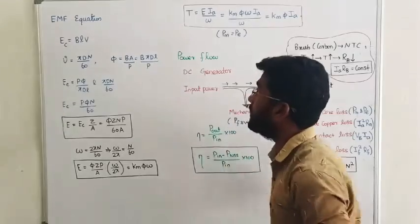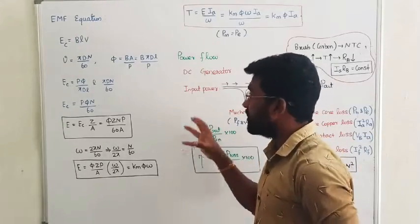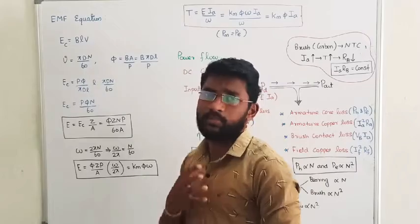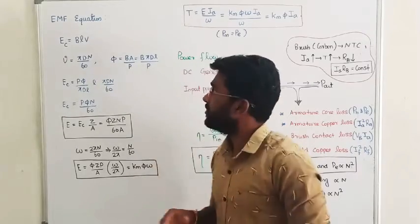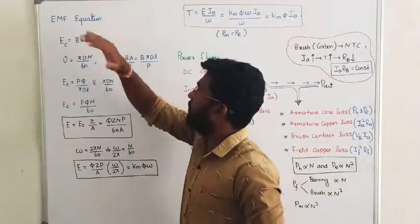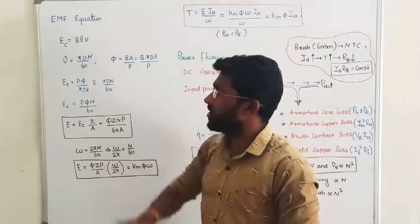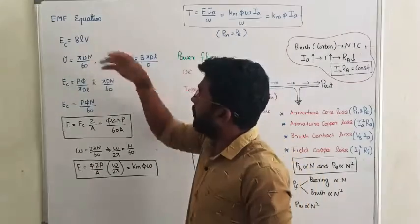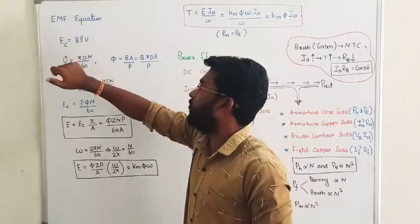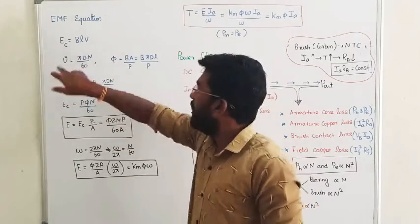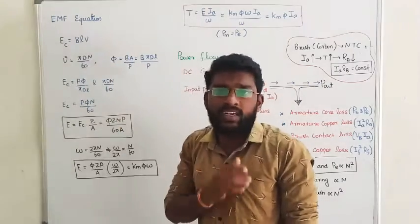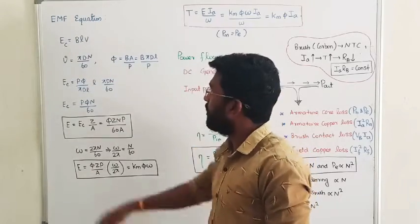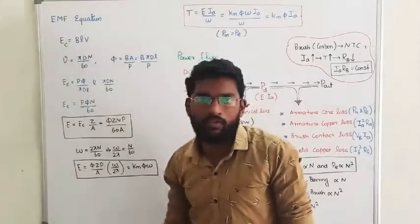Now we are going to look at the EMF equation. We are going to discuss dynamically induced EMF in a DC machine. Let me take the dynamically induced EMF, where B denotes the magnetic flux density, L is the axial length, and V denotes the velocity offered by the machine.